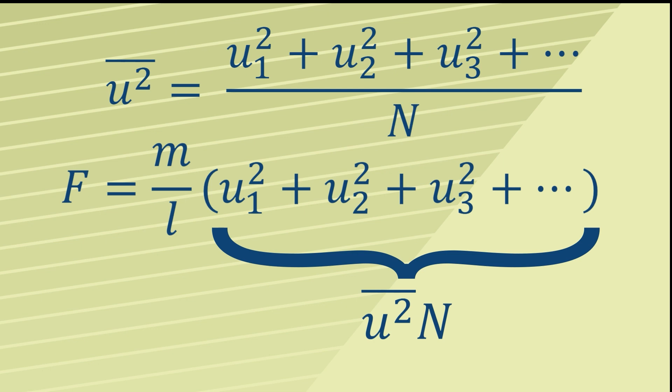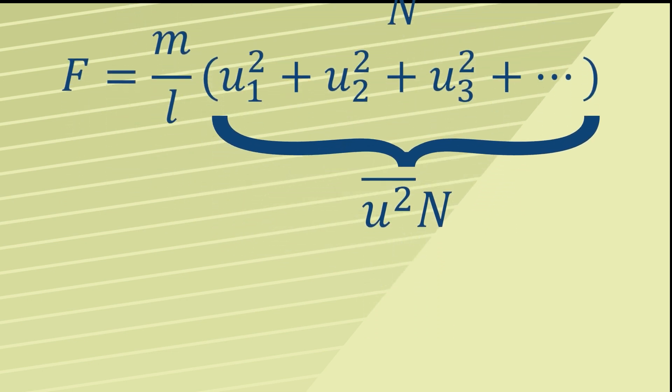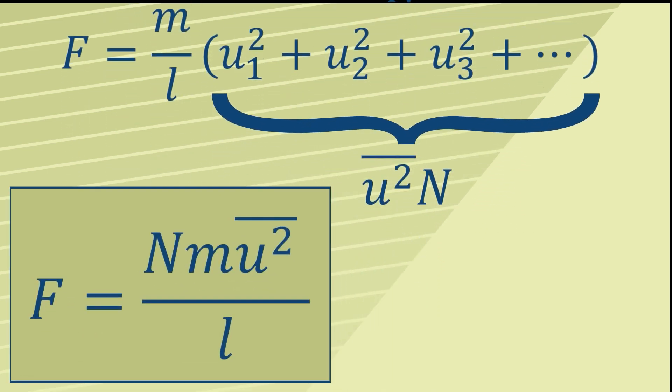We can therefore substitute for said difficult bit inside the bracket with mean square speed times N, and this therefore leads us to a nice simple little formula for the force on the wall caused by N particles. And that force is Nm times the mean square speed, all divided by L.